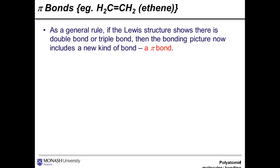And the answer, of course, is that there's another kind of bond, and that's pi bonds. So there are sigma and pi, and these are really the only two that you need to know about. As a general rule, if the Lewis structure shows there is a double bond or a triple bond, then the bonding picture now changes to include a new kind of bond, a pi bond.